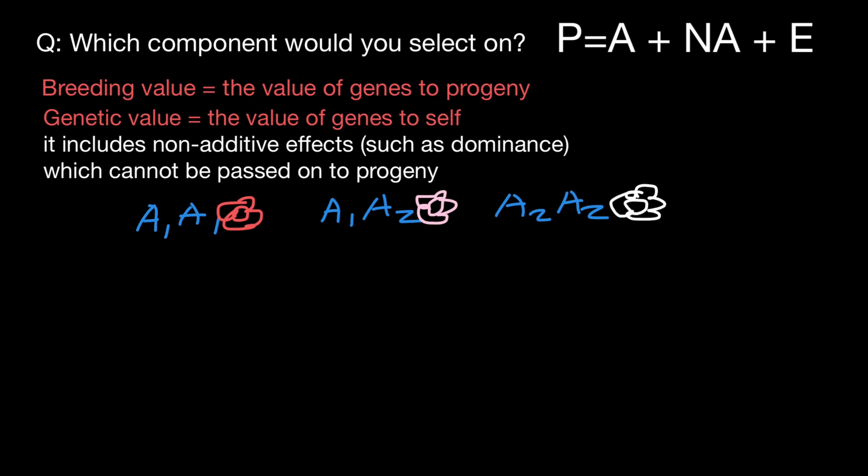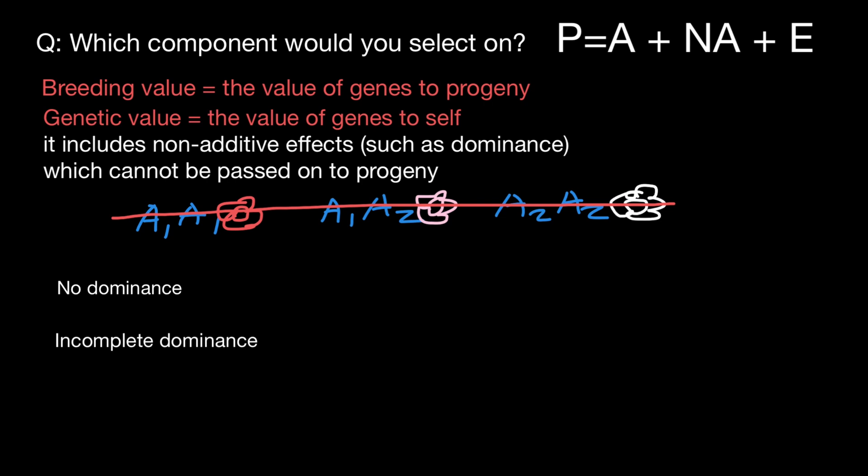And genotype A1A2 would be intermediate — between red and white, which is pink. That was a fast review of what you probably already know from school textbooks. But in breeding and selection, we use a different concept of incomplete dominance. So let me introduce the conceptual framework we use in animal or plant breeding and selection. We distinguish no dominance, incomplete dominance, and complete dominance.